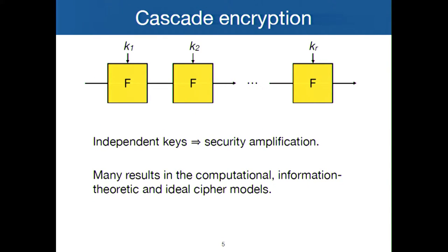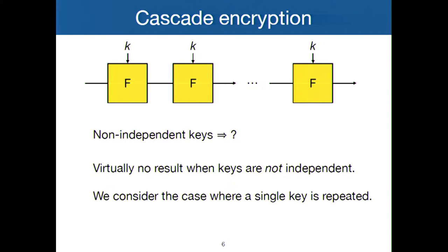This problem is naturally related to cascade encryption. Cascade encryption is the case where you iterate a cipher but use independent keys for each cipher. This is well studied and really interesting because in that case you can amplify security — the security of the whole construction is actually better than a single block cipher. This has been proven in several settings, not just information-theoretic but also computational. But what we are interested in here is the case where the key is the same every time, and as far as I know, there is basically nothing known about that.